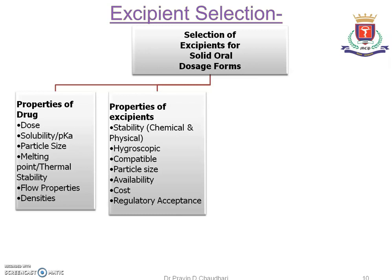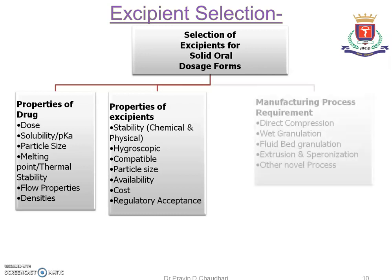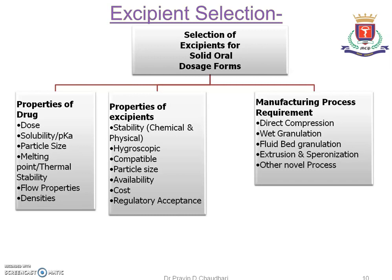Along with those factors, the selected excipient should be regulatory acceptable, so regulatory acceptance is another important consideration. Manufacturing process requirements also matter: for direct compression, certain excipients are used — for example, MCC (microcrystalline cellulose). For wet granulation, lactose is used. For fluid bed granulation, thermally insensitive excipients are preferred; those not stable in the presence of heat cannot be formulated into tablets. Other processes include extrusion, spheronization, and similar methods.